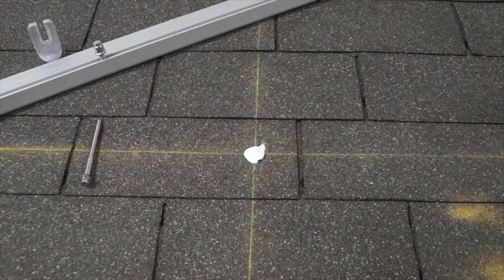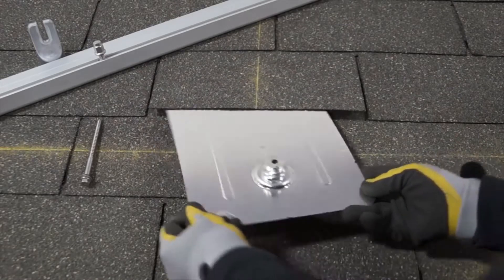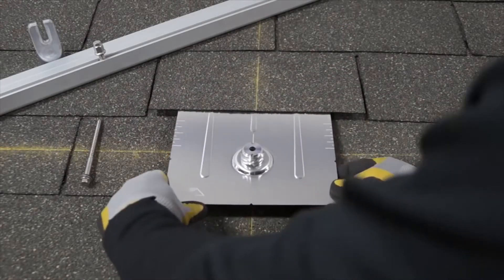Installing FlashFoot 2 couldn't be easier. Ribs and rounded corners make it easy to slide the flashing between shingle layers, and alignment markers help you center it over the pilot hole.